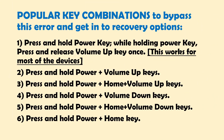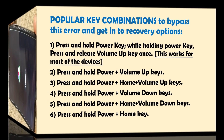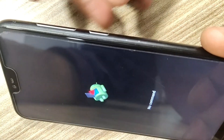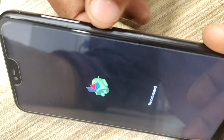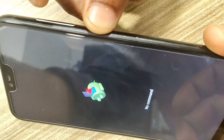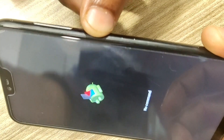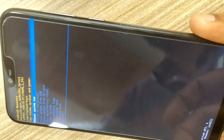To bypass this error and to get into the recovery screen, we have to try different key combinations and press-hold-release sequences. Here are the most popular key combinations. Options are different for every phone model, so try different options until you get the recovery screen. Option 1 works for my phone model — press and hold the power key, then tap on the volume up key. Here you go, I got my recovery options.